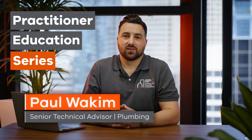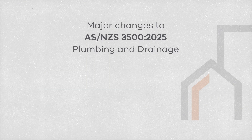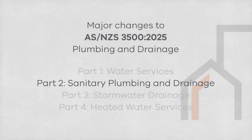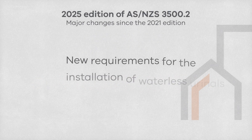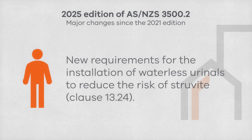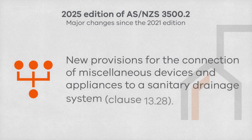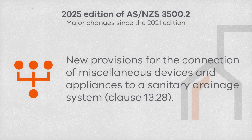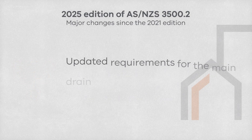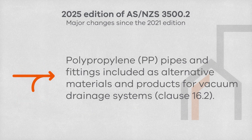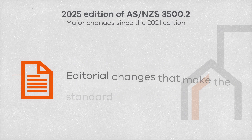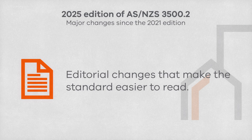Hello and welcome everybody to today's session regarding the key changes in the 2025 edition of AS3500 series Part 2, sanitary plumbing and drainage. A few of the major changes are new requirements for the installation of waterless urinals, new provisions for the connection of miscellaneous devices and appliances to a sanitary drainage system, updated requirements for the main drain lines serving multi-unit developments, polypropylene pipes and fittings included as an alternative material for vacuum drainage systems, and editorial changes that make this standard much easier to read.